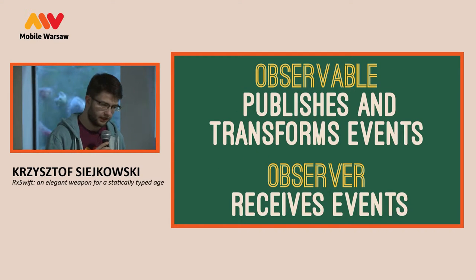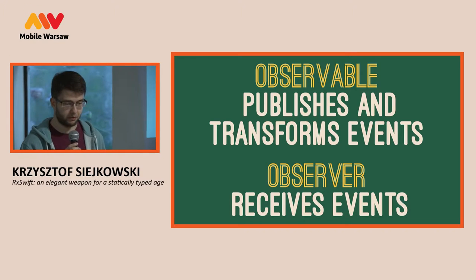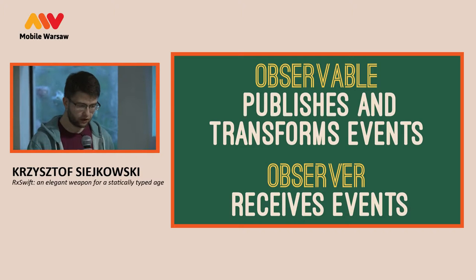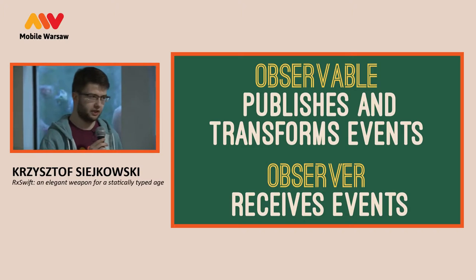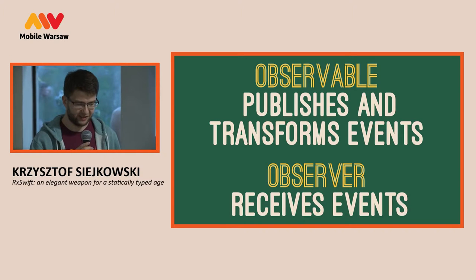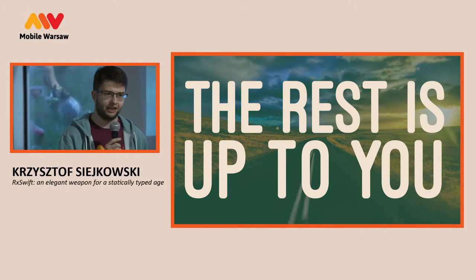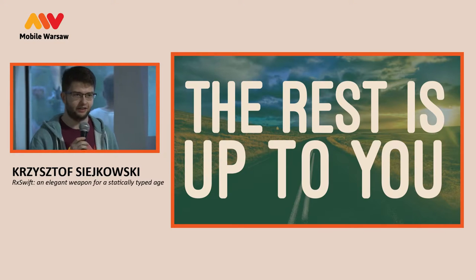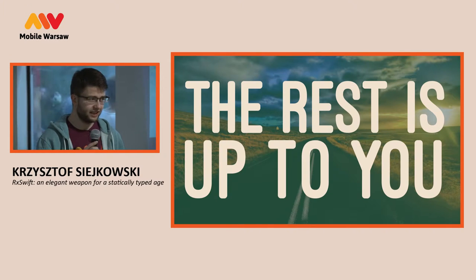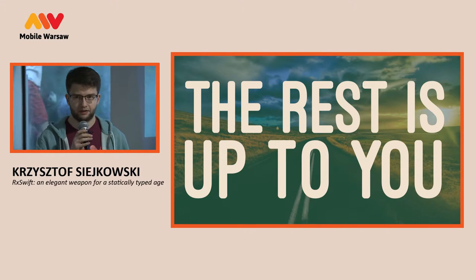Now that we know a little more about observables, we can come up with a better definition. An observable is something that publishes and transforms events, and an observer is something that consumes those events. If this sounds very generic, it's good — this was designed exactly for that. There are many questions like what thread is the data generated on, how many events are coming, or when they are terminating — and all those details are under your control.